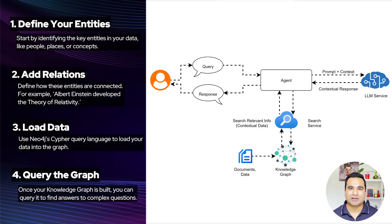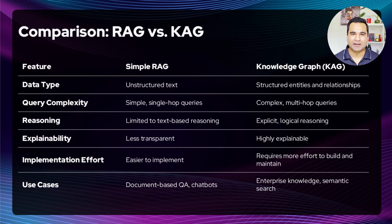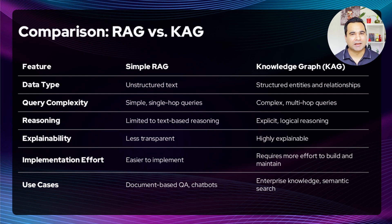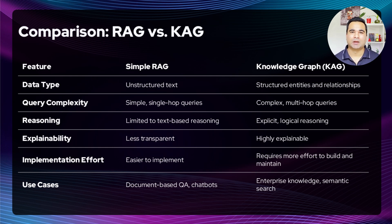So why is KAG so powerful for AI agents? While RAG is great for answering questions based on unstructured text, KAG takes it a step further by leveraging structured knowledge. This means AI agents can handle complex queries that require reasoning across multiple facts and relationships. For instance, imagine a medical AI agent that uses KAG — it doesn't just look up symptoms in a document, it understands the relationships between diseases, symptoms, and treatments, making it incredibly accurate and reliable. KAG is also highly explainable. Because it's based on a structured knowledge graph, you can see exactly how the AI agent arrived at an answer. This transparency is crucial for applications like healthcare, finance, and law.